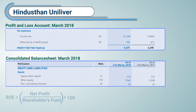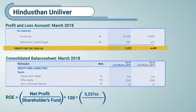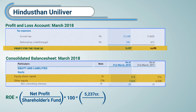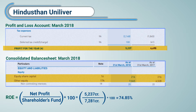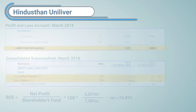Similarly, we calculate the ROE of Hindustan Unilever. The net profit of Hindustan Unilever is Rs. 5,227 crores and total equity is Rs. 7,281 crores, according to the March 2018 balance sheet. Therefore, according to the formula, net profit divided by total equity multiplied by 100 gives us a value of 74.85% ROE.